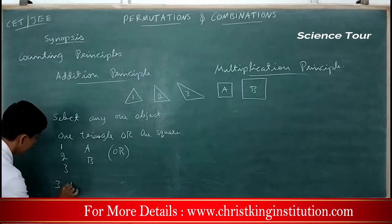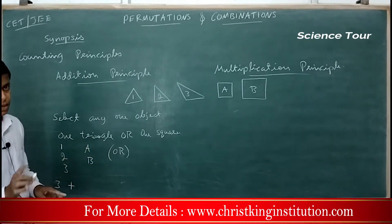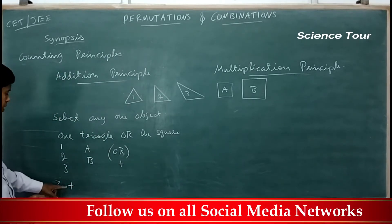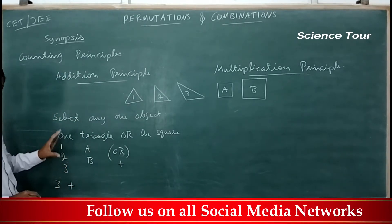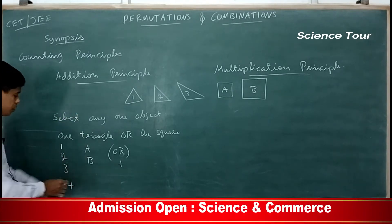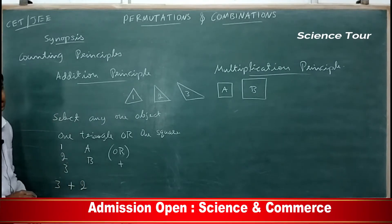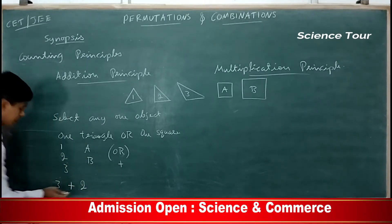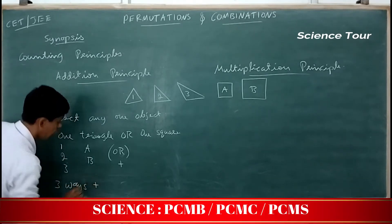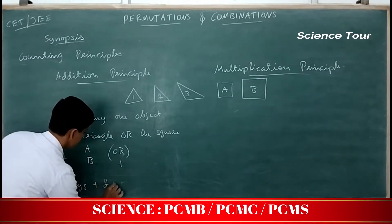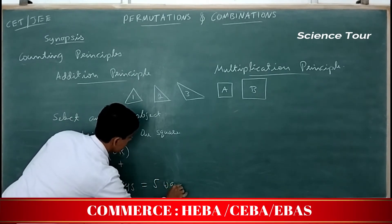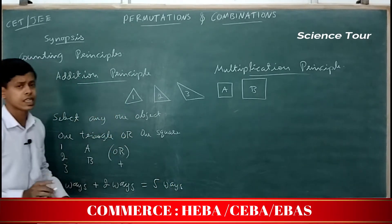This is totally three triangles and we are saying 'or' — remember, whenever you use the word 'or', it means addition. Either you can take any one of the three triangles, so you have three ways of selecting a triangle, and you have two ways of selecting a square. Three ways or two ways — addition gives you five ways of selecting one object.